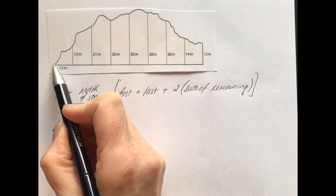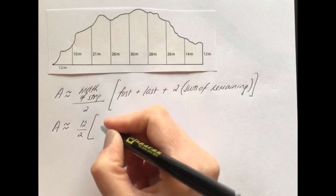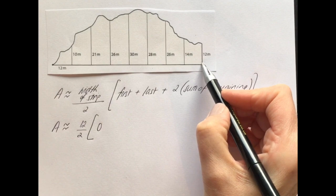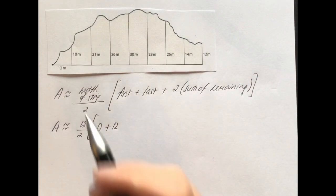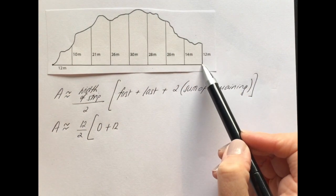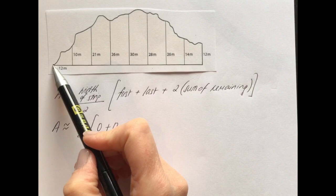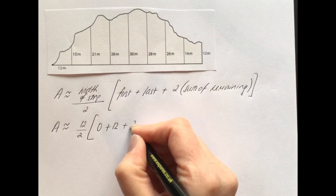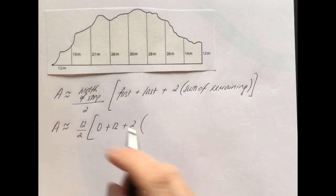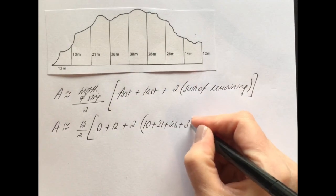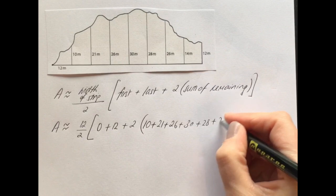The very first height, where it's starting on the left-hand side, has no height - so we put in zero. If you're starting on the ground, there's no height, and that is the first place we start here. The last height is 12. Sometimes both the first and last height could be zero if they're both starting on the ground, and you must put them in as zero. Then plus twice the sum of the remaining heights: 10 plus 21 plus 26 plus 30 plus 28 plus 26 plus 14.